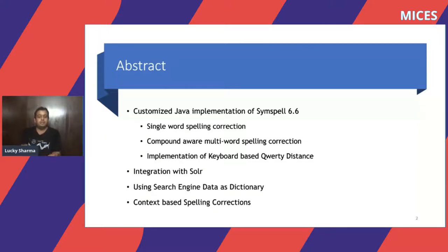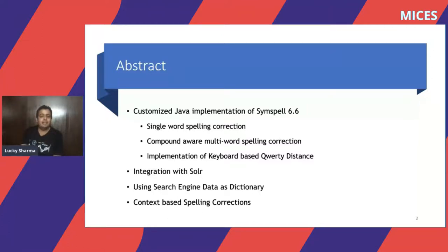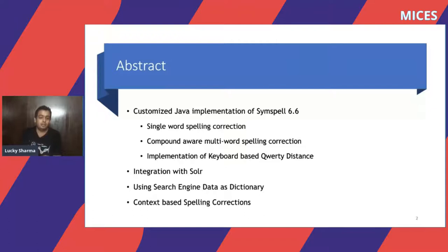If someone types 'slices' and in the index we have 'slices' and 'olives', when looking at edit distance, both have edit distance 1 from the input. But if you look at the keyboard, S and O are on opposite sides of the keyboard, while V and C in 'slices' are basically adjacent. This gives major weightage that one candidate is closer to the original word, and that's where QWERTY distance helps.